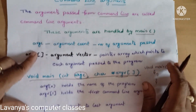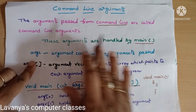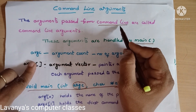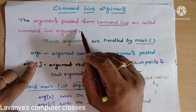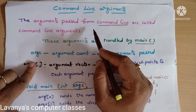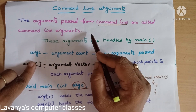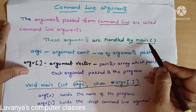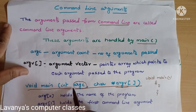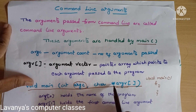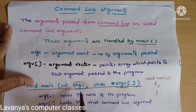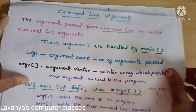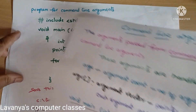This is the introduction to command line arguments. Command line arguments are any arguments passed from the command line. We send them through the main function. When using command line arguments, we need two parameters in main: one is ARGC (argument count) and the second is ARGV (argument vector).